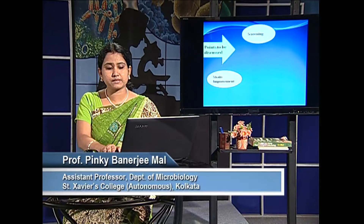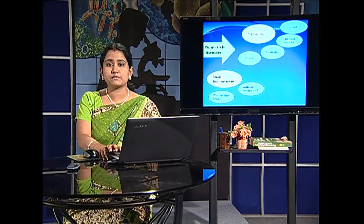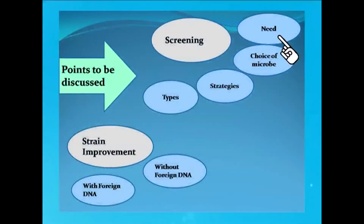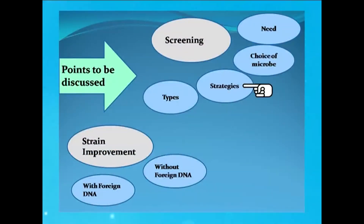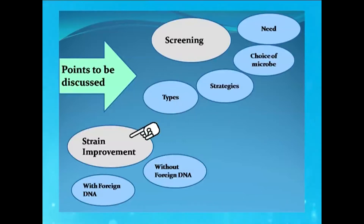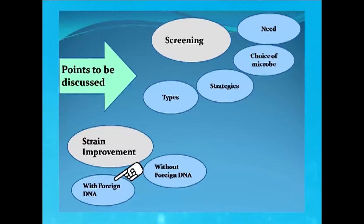Under the topic screening, there are four sub-points, namely need of screening, choice of microbe, strategies for screening, and types of screening. And under the point strain improvement, there are again two sub-points, which are strain improvement without the help of foreign DNA and strain improvement with the help of foreign DNA.